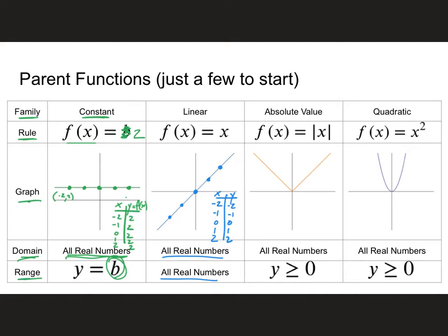Let's go on and look at the absolute value graph. If you remember, the absolute value always makes the values positive. Going from negative two to two for our x values: the absolute value of negative two is positive two, giving point negative two, two. Negative one gives point negative one, one. Zero gives zero, zero. One gives one, one. Two gives two, two. Domain is all real numbers. But since absolute value is always positive, y values can't be negative — so range is y greater than or equal to zero.